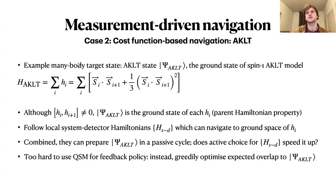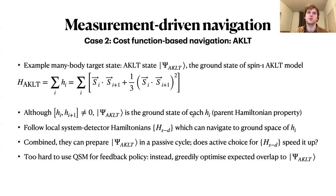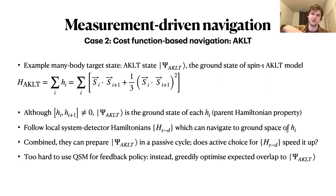Larger target states, if they have limited entanglement, often have good parent Hamiltonians. A simple example is the AKLT state, the ground state of the AKLT Hamiltonian. This is a parent Hamiltonian: individual terms do not commute with each other, so the AKLT state is entangled, yet it is the ground state of each separate term individually. This works because the ground space of each term individually is degenerate. This is a spin-1 Hamiltonian — a qutrit model — where S is a spin operator in three-dimensional representation.